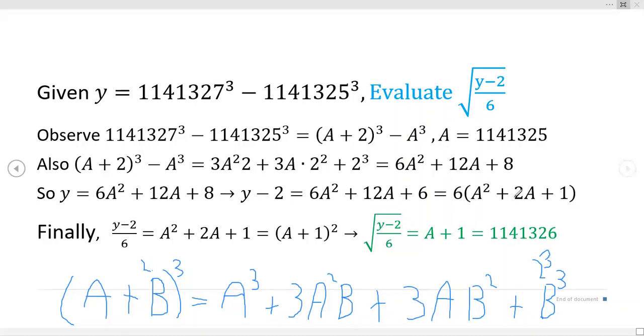When you factor the 6 out and divide by 6 you get (y - 2)/6 equals all of this. Notice though that this is a perfect square binomial and so you get the square root of (y - 2)/6 is equal to a + 1. That's just the properties, the relationship between the square root and the squaring function - they're inverses of each other.